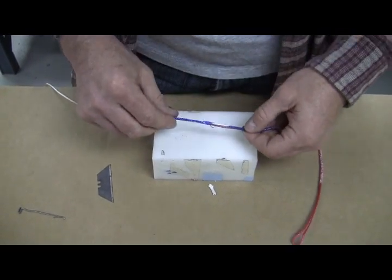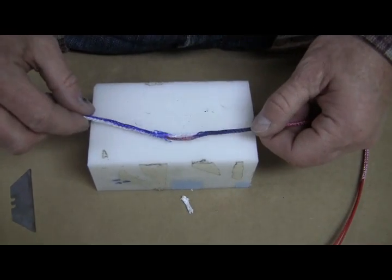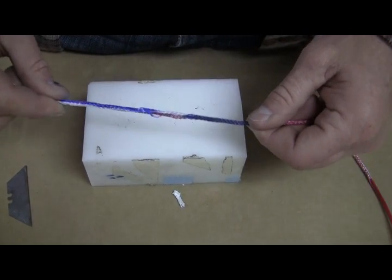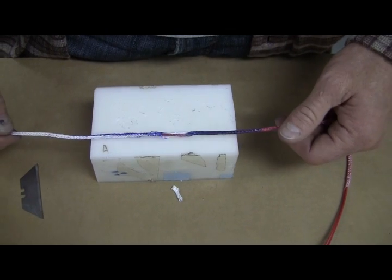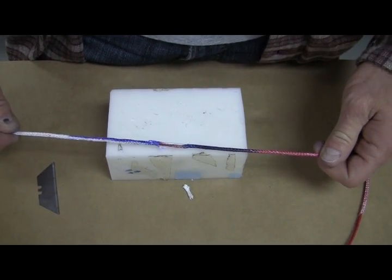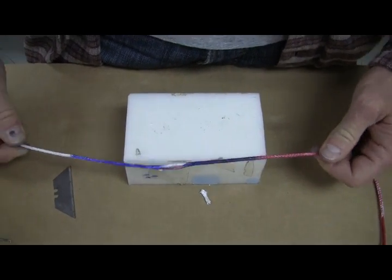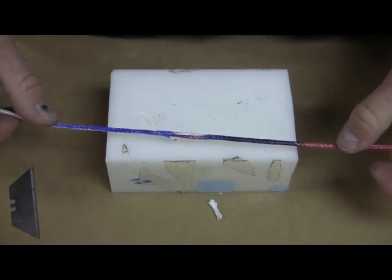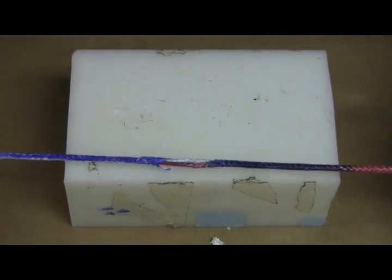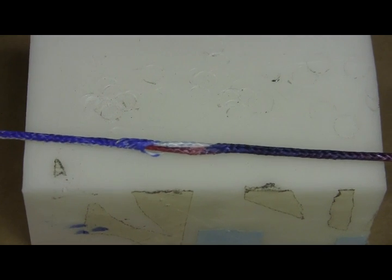So if over time you see the splice looking like this, it is high time to replace it. This gives you a good indication that it's pulling apart and the overlap is getting less and less at the ends. You just want to cut out this section and redo your splice.